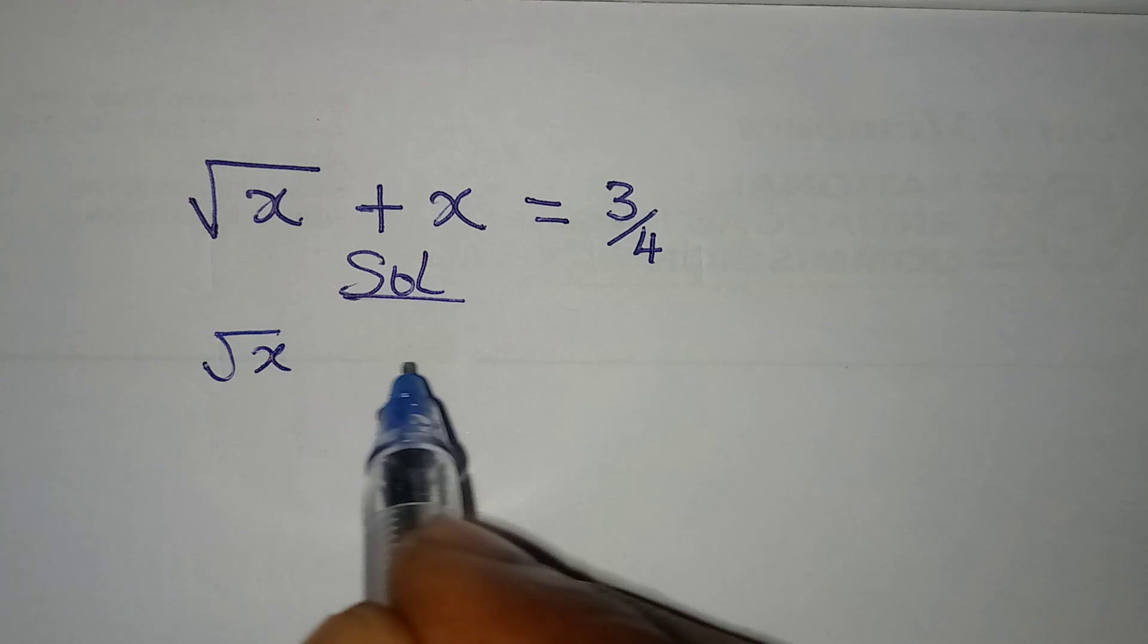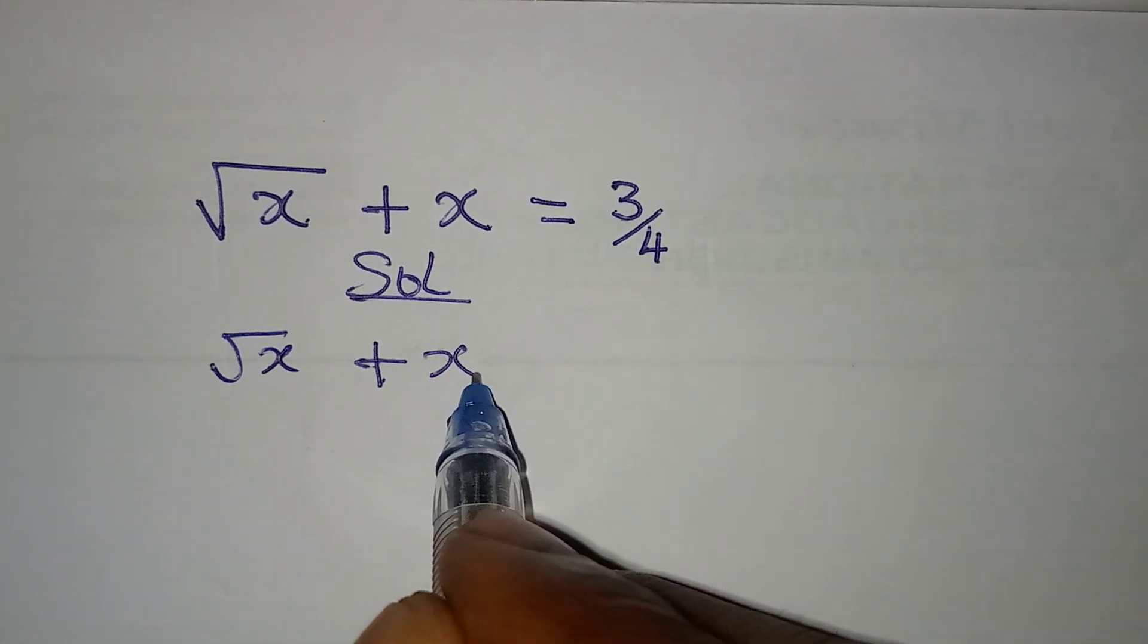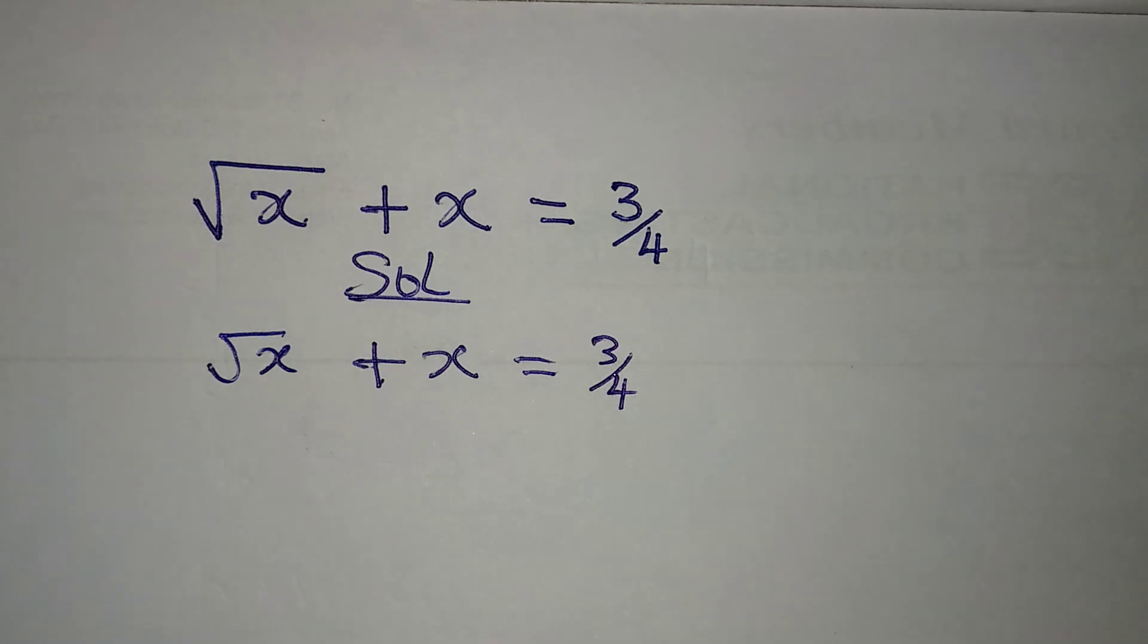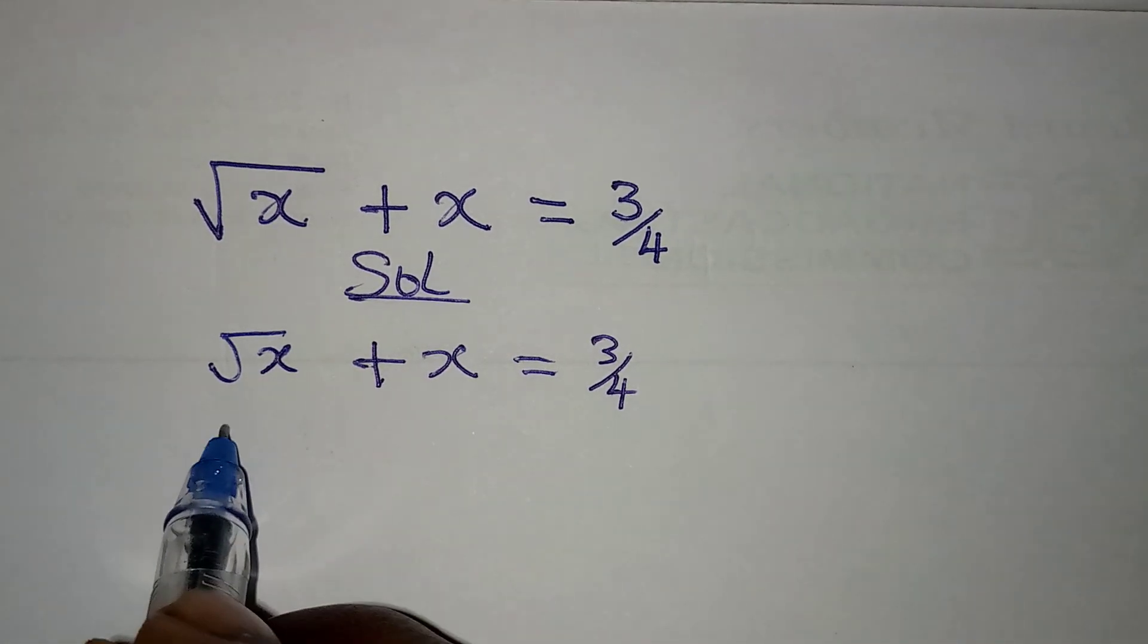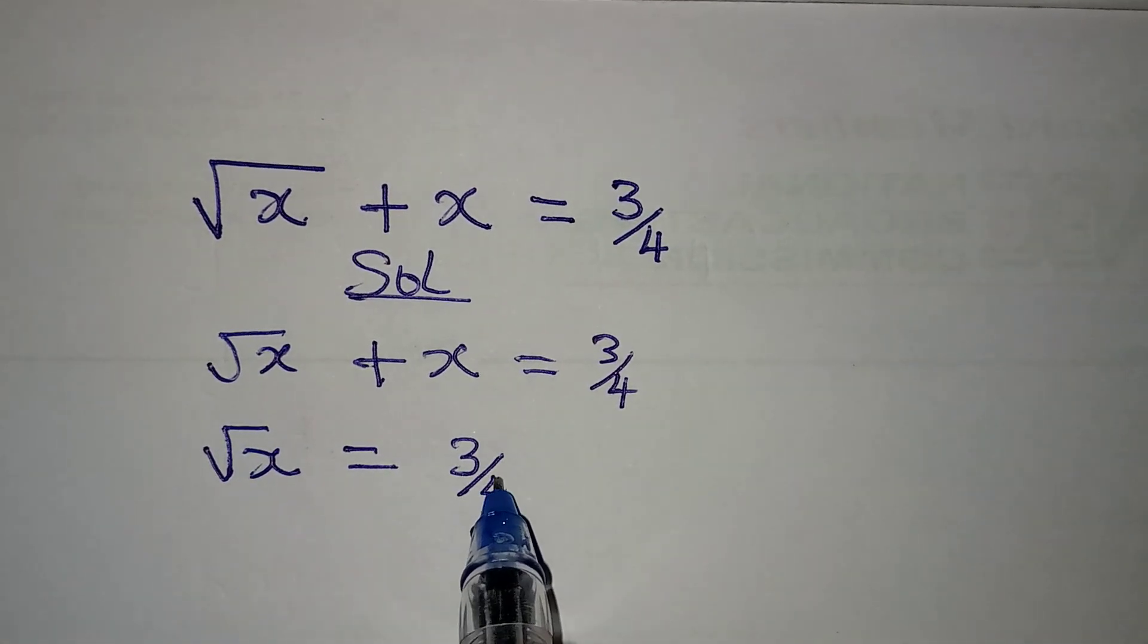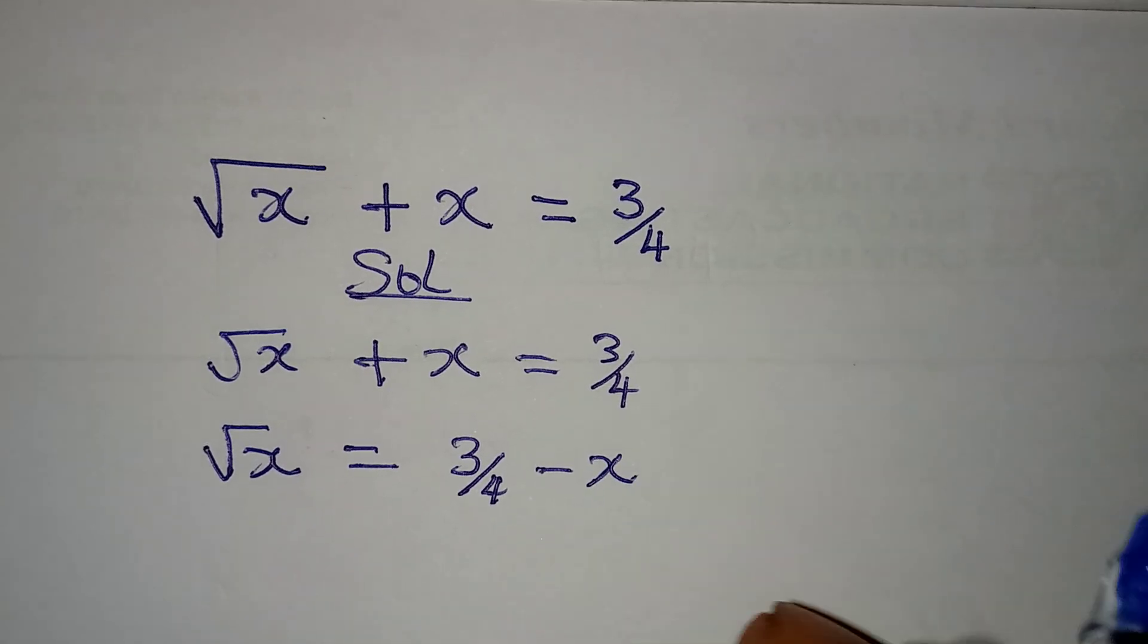We have square root of x plus x equals 3 over 4. So how do we get the value of x for this? First of all, make root x the subject, so we have 3 over 4 minus x.